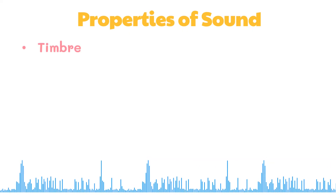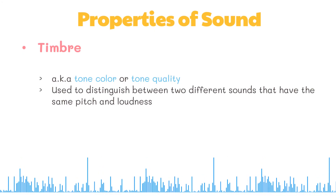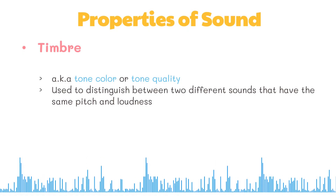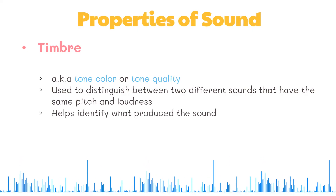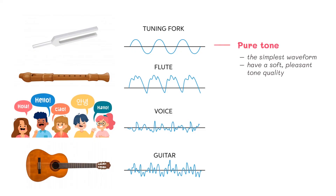The timbre, or tone color or tone quality, of a sound is used to distinguish between two different sounds that have the same pitch and loudness. This tone quality is very important since it helps us identify what produced the sound. The tone quality of a sound depends on the waveform of the sound wave. If two sounds have different waveforms, we usually perceive different tone qualities. A note played on a violin does not sound like the same note played on a trumpet. The simplest waveform is that of a pure tone. Pure tones have a soft, pleasant tone quality. A complex tone consists of two or more simple tones.